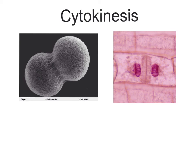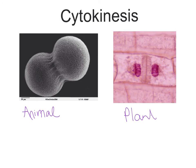Cytokinesis is different in animal and plant cells. In a sea urchin you can see that cleavage furrow where the protein ring is constricting and getting smaller to pinch that one cell into two cells. In a plant cell, because plants have a cell wall that is too rigid to simply pinch off, what happens instead is the formation of a cell plate — basically the creation of a new wall. Imagine you had a big room and wanted to split it into two rooms — you'd build a wall in the middle. So we have the two nuclei that have formed, and then the new cell wall forming between them.